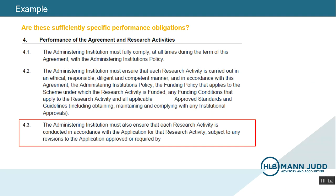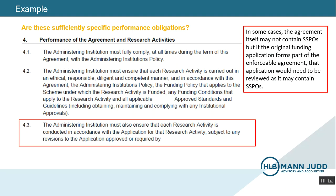In this next example, I just want to draw your attention to clause 4.3 outlined in red. This clause states that the administering institution must ensure that the activity is conducted in accordance with the application. Similar to the previous example, since the application forms part of the enforceable agreement, it would be necessary to read the application and consider whether it contains sufficiently specific performance obligations. Whilst funding agreements can often be quite generic — which is not surprising as they often come from a central template used for various grantees — it is the separate items such as applications, delivery plans, and other schedules that may contain more specific detail. It is therefore important to consider such other information.